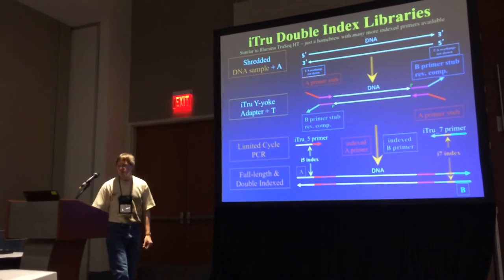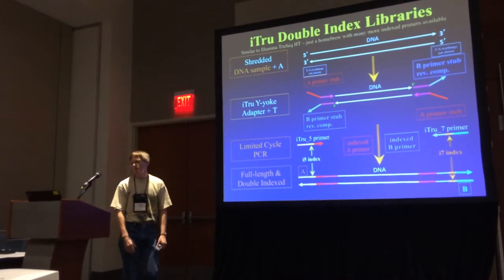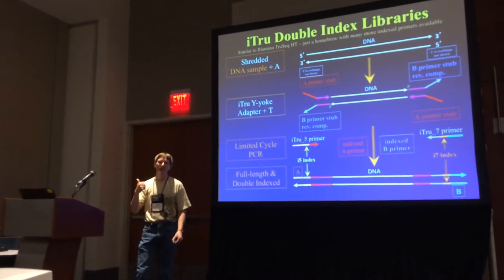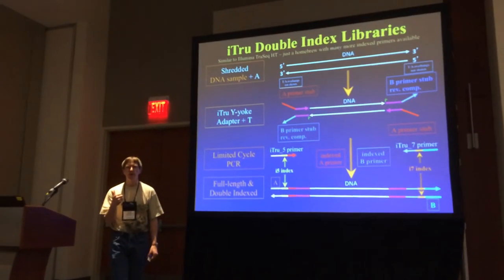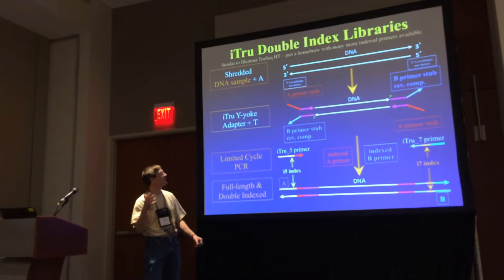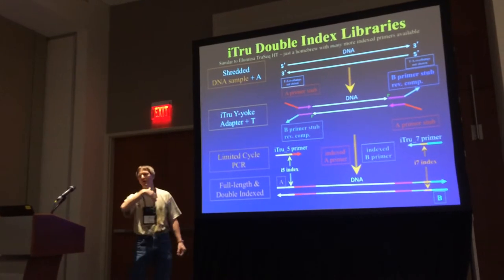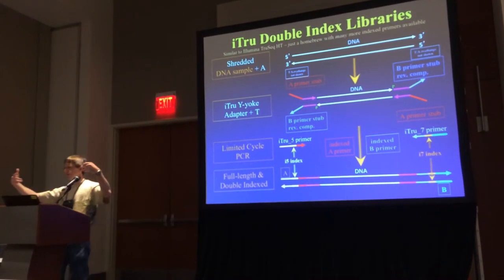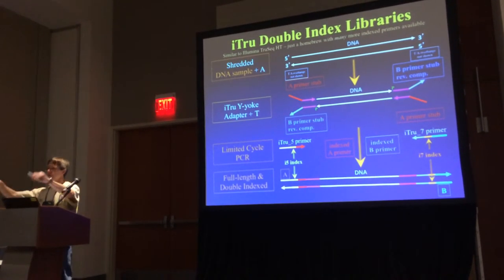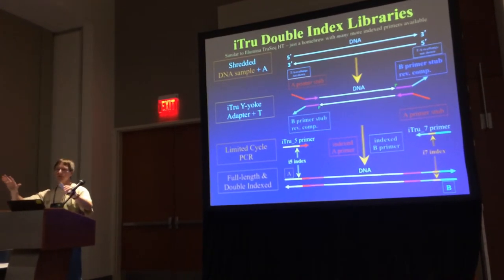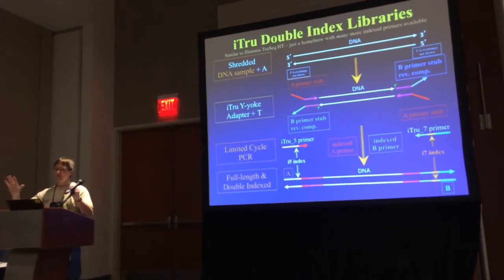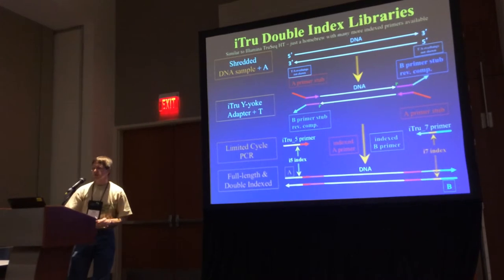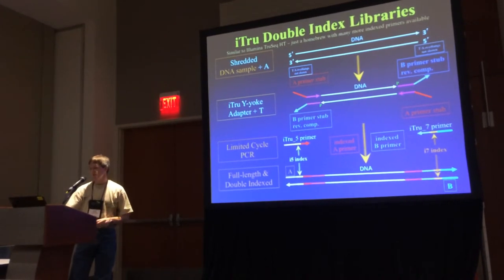Our first example is making genomic libraries. There's really nothing unique about that — it's the normal library prep process. Shear your DNA, add an A, put in adapters that have T, do the PCRs. Nothing funky about that. You can use Kapa kits. Life is good.